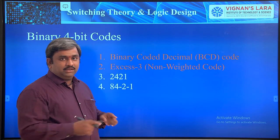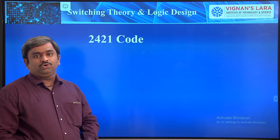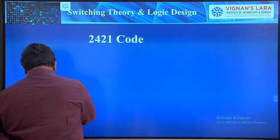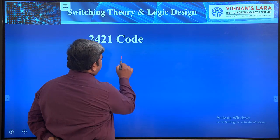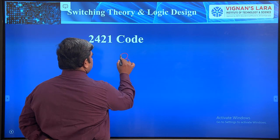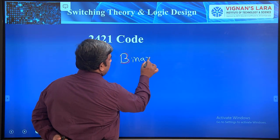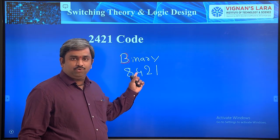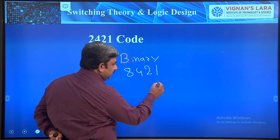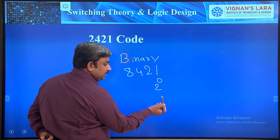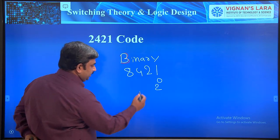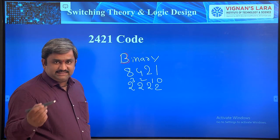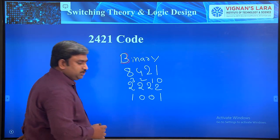Before introducing the 2421 code, let's review the 8421 code. The normal binary system is called the 8421 code. The name comes from the positional weights: the LSB bit is multiplied by 2 power 0, the next by 2 power 1, then 2 power 2, and 2 power 3 — giving weights 1, 2, 4, 8.